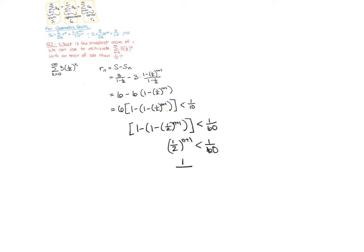We can distribute this n plus one power to the denominator, so this is one over two to the n plus one, which is then multiplying both sides by 60 as well as both sides by two to the n plus one. Notice these are both positive, so what we really need is the first power, the first n that makes two to the n plus one bigger than 60.